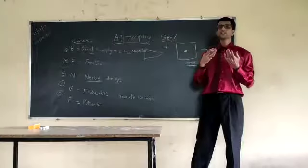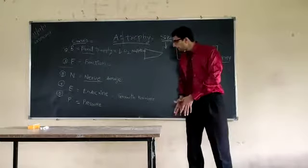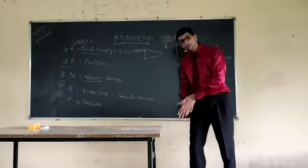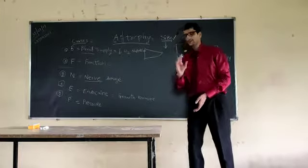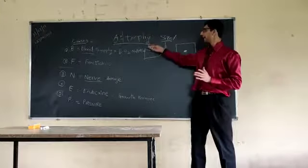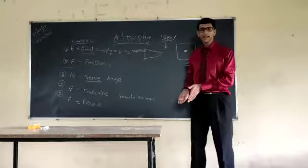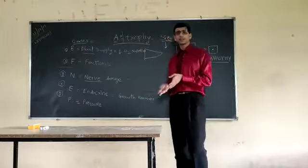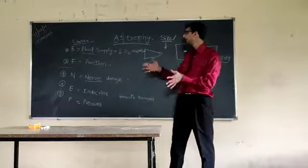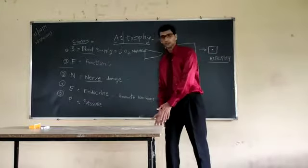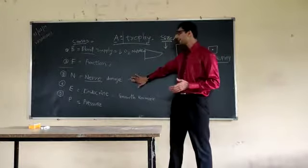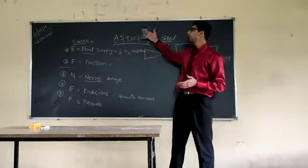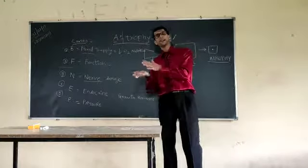So if there is a damaged nerve supply, for an example in case of polio, so that leg will be thin. As there will be no nutrition. As there is nerve supply is damaged. So no movement. No circulation. And slowly slowly the limb gets shrink. So polio is an example of nerve damage leading to atrophy of affected limb.